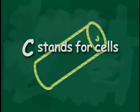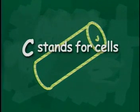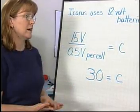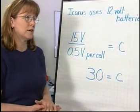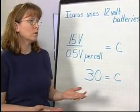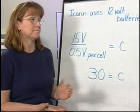If we solve for C, which stands for the number of cells, we see that it will take 30 cells to give us 15 volts to successfully charge the batteries. From this information, we can arrange our solar cells in a solar array pattern.